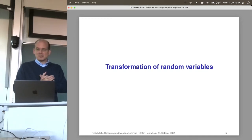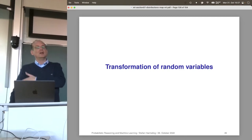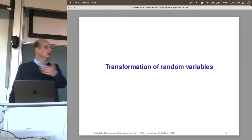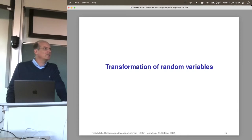Random variables are very central. In a way, if I write a Python program and declare a variable with a value, a random variable is a value that carries a distribution — not really a value, but only a distribution. So it's interesting to ask: if I transform a random variable, how does the distribution change?